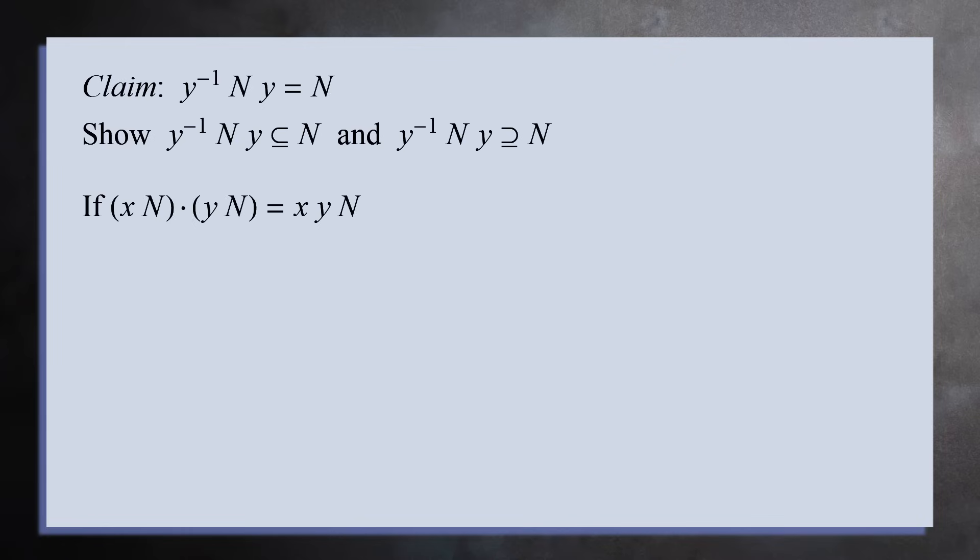So to summarize, if the product of the two cosets xN and yN is well defined, then it must be true that y inverse times N times y equals N. We call the left-hand side a conjugate.